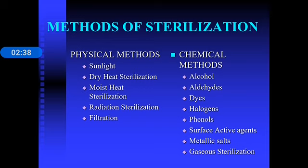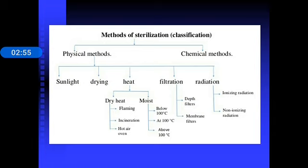Chemical methods include alcohols, aldehydes, dyes, halogens, phenols, surface active agents, metallic salts, and gaseous sterilization. So physical methods cover sunlight, drying, dry heat, moist heat, filtration, and radiation, while chemical methods will be discussed last.